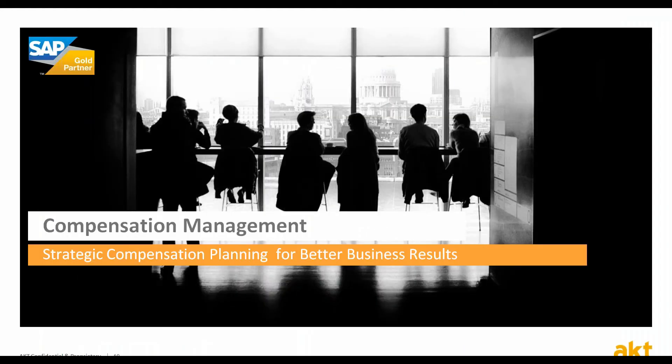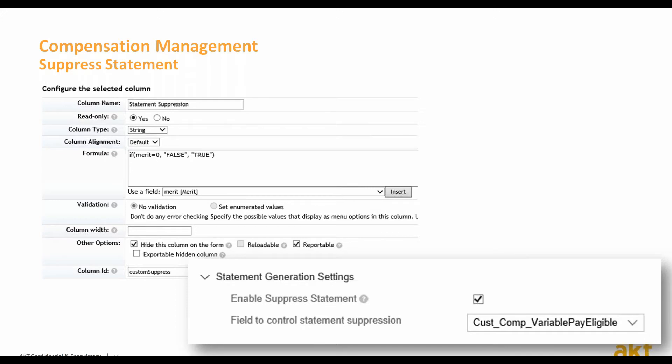Let's look at what's in store for compensation management — specifically, suppressing statements. Oftentimes, reward statements do not need to be generated for employees in certain situations, like for those not receiving a pay increase or bonus payout at the end of the year. Now the comp administrator can define when statements are not generated by adding a custom column in the compensation or variable pay templates to control statement generation or suppression for an employee.